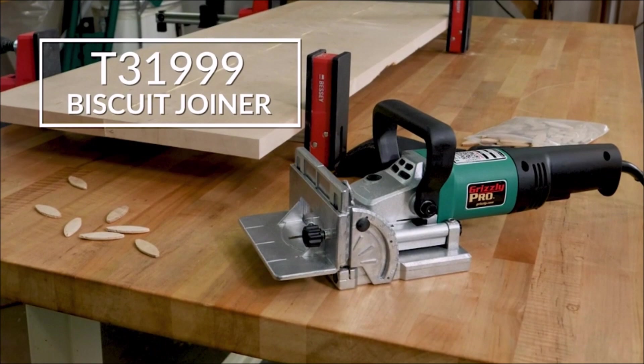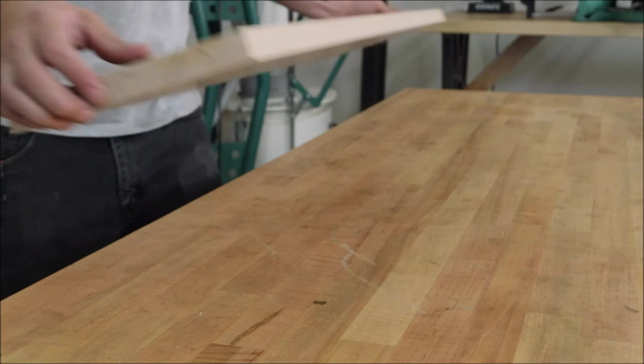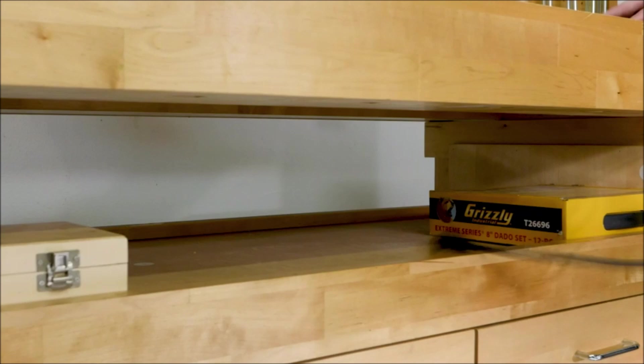Number 6, Grizzly Pro T31999 Biscuit Joiner. A biscuit joiner makes half oval shaped grooves and the mating edges of two boards, then biscuits are inserted into the grooves prior to glue up to reinforce the joint. Biscuit joining is one of the quickest, most effective ways to join two pieces of wood together. Whether edge joining panels for a custom tabletop or joining two box sides at 90 degrees, you can make a hidden, reinforced joint that's stronger than the wood itself, all with no fasteners or hardware.